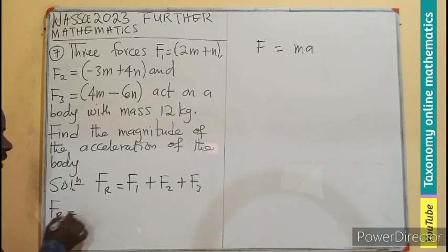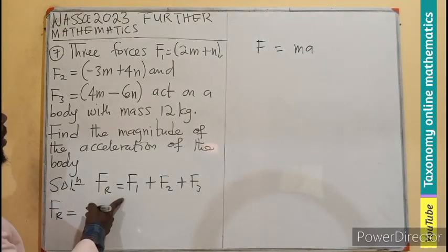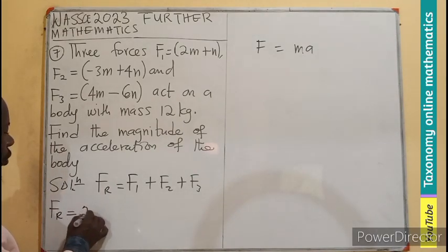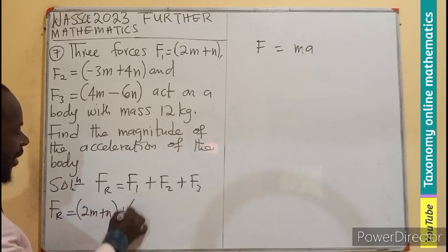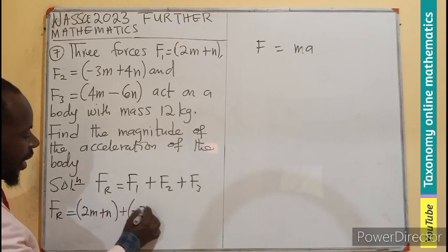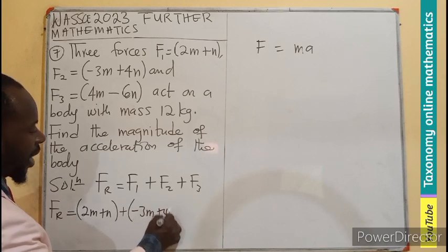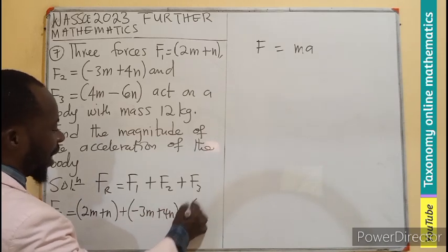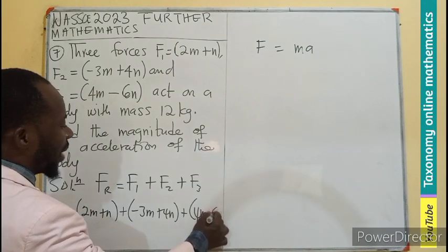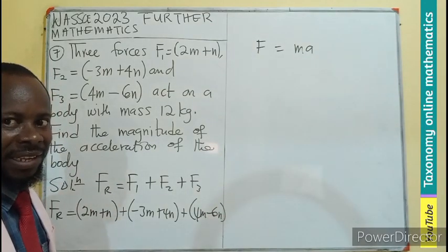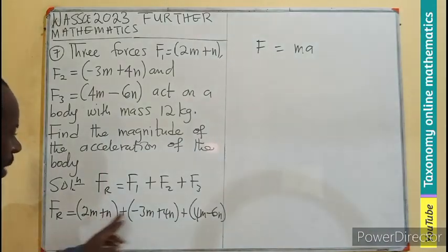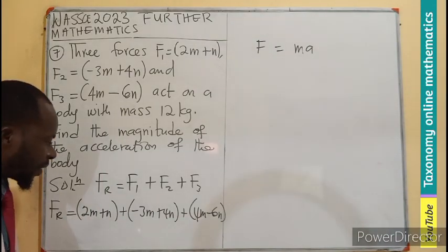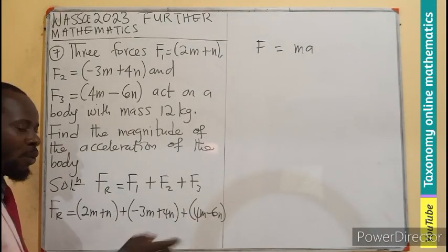Your resultant force is going to be the first one which is 2m plus n, then the second one will be negative 3m plus 4n, then the final one will be 4m minus 6n. And this is a simple algebraic tense. So m, m, m will come together. Then the n and n will also work together.